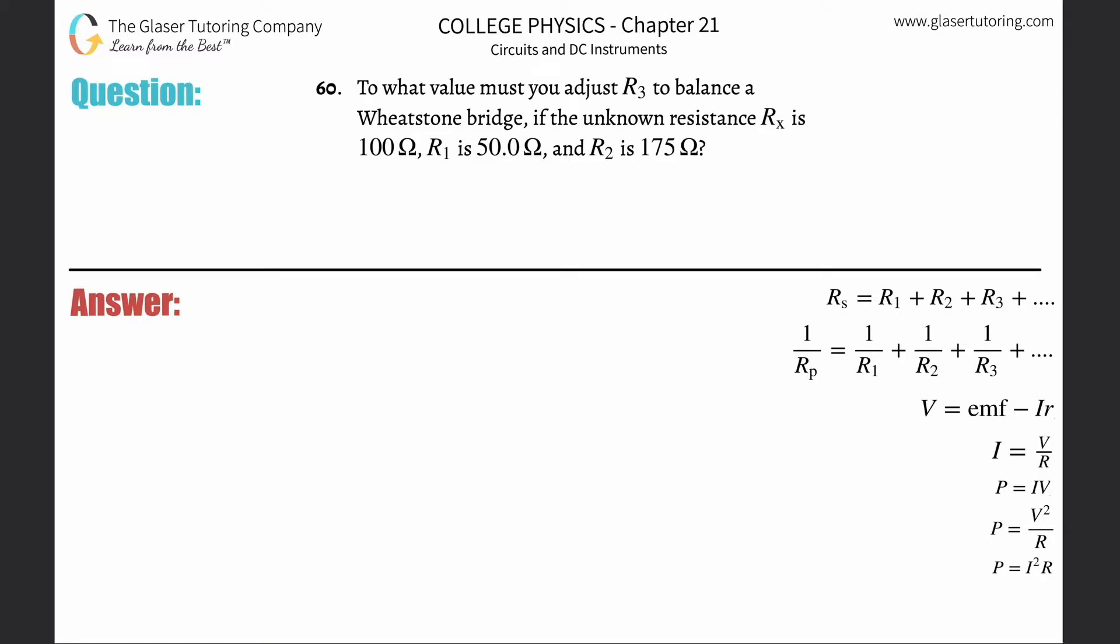Number 60, to what value must you adjust R sub three to balance a Wheatstone bridge if the unknown resistance R sub x is 100 ohm, R1 is 50, R2 is 175.